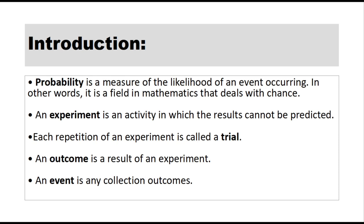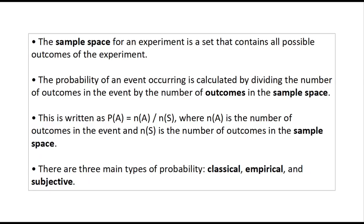An experiment is an activity in which the results cannot be predicted. Each repetition of an experiment is called a trial. An outcome is a result of an experiment. An event is any collection of outcomes. The sample space for an experiment is a set that contains all possible outcomes of the experiment.